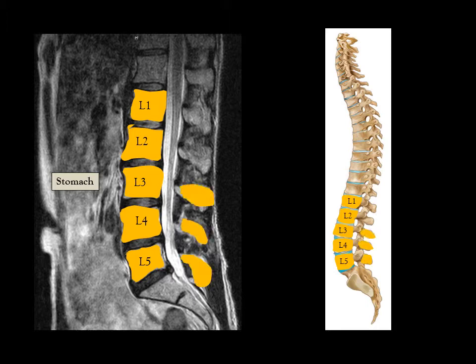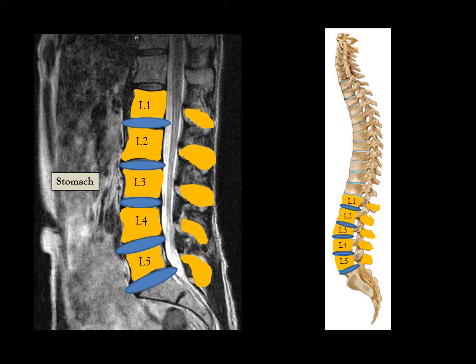Now being highlighted are called spinous processes. They are also part of the vertebra, and these are the bones that can be felt when running your fingers down the back of your spine. Between the vertebral bodies are where the vertebral discs are located, represented by the blue ovals.